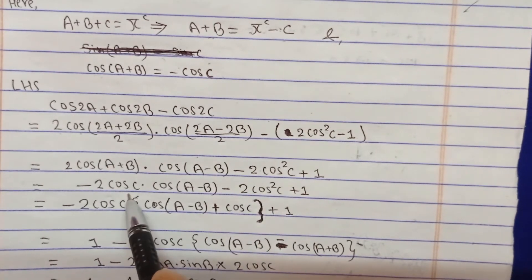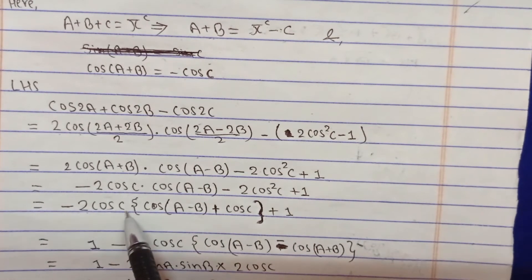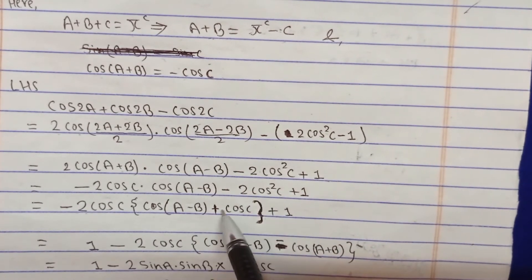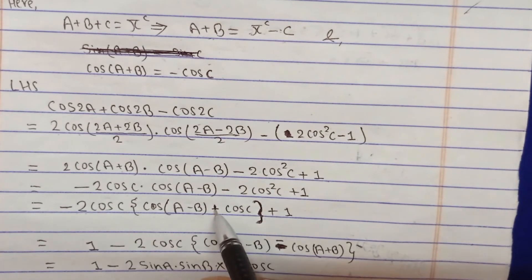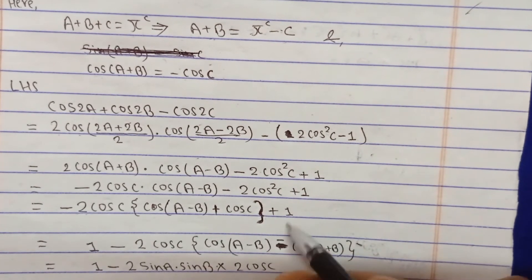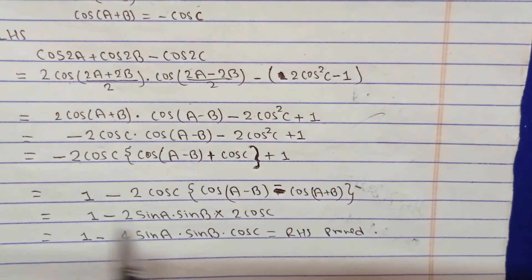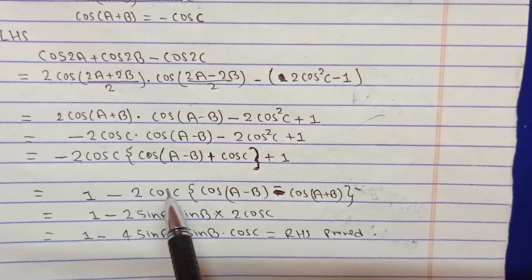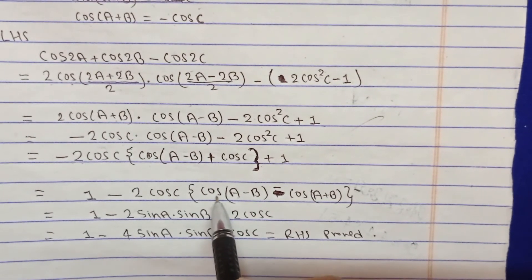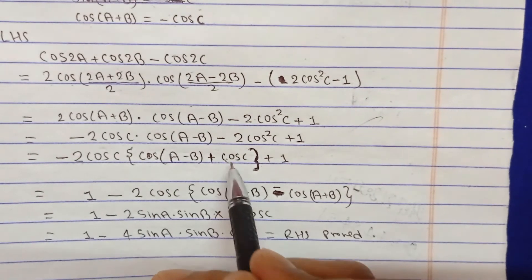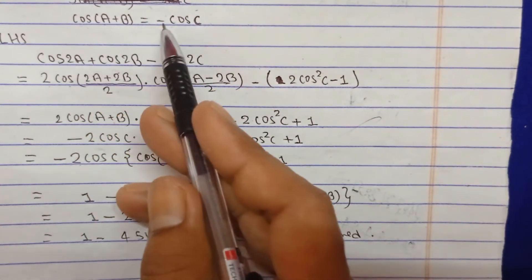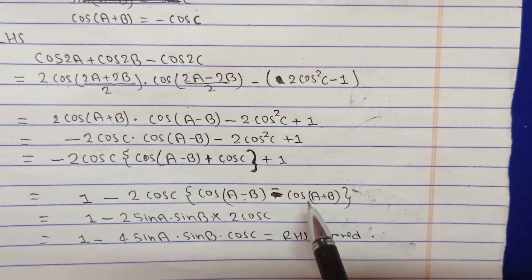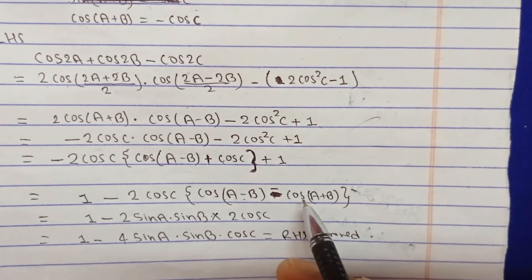Taking minus 2cosC as a common factor from the first two terms, we get 1 minus 2cosC times (cos(A-B) plus cosC) plus 1. Now, in place of cosC we can write minus cos(A+B), so we replace cosC with minus cos(A+B), giving 1 minus 2cosC times (cos(A-B) minus cos(A+B)).